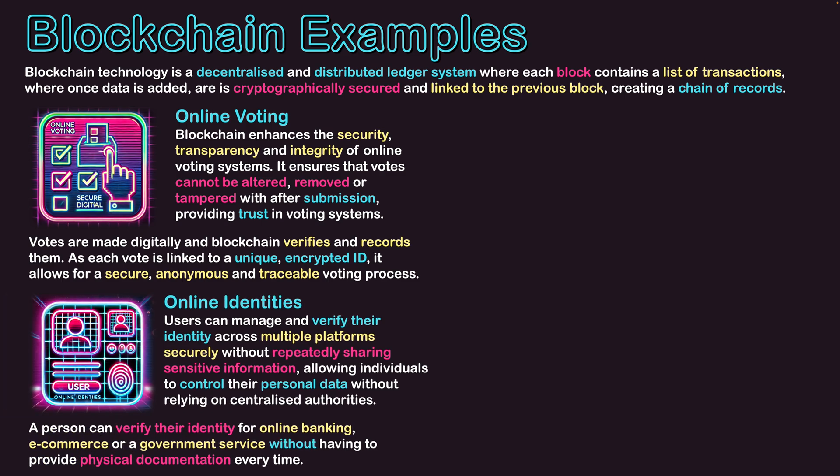The next one is online identity. Users can manage and verify their identity across multiple platforms securely without repeatedly sharing sensitive information, allowing individuals to control their personal data without relying on centralized authorities. You can have digital licenses or membership cards stored on your system and use those to verify who you are when signing up for an online service. A person can verify their identity for online banking, e-commerce or government services without having to provide physical documentation every time.